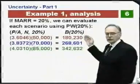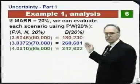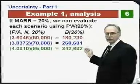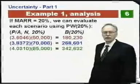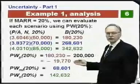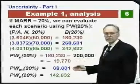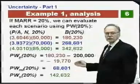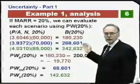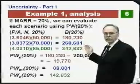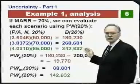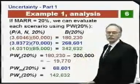We have the present worth of cash inflows for each of the three scenarios. Then we subtract the present worth of the investment — $200,000 in each case. That gives us minus $19,770 for the pessimistic scenario, $68,601 for the most likely (from $268,601 minus $200,000), and for the optimistic scenario, $342,632 minus $200,000. So we have three numerical values of present worth.